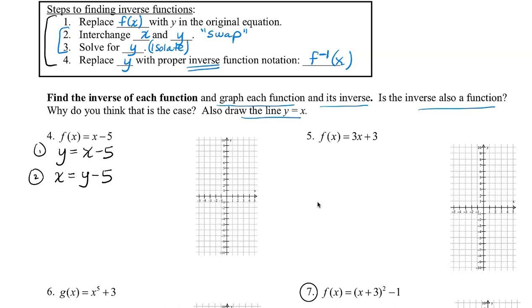Step 3: we solve for y. We're going to add 5 to both sides to solve for y. So we get x plus 5 equals y. Step 4: we're going to replace y with the proper notation. I'm going to put the y out in front. So we have the inverse of f(x) equals x plus 5.